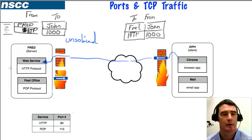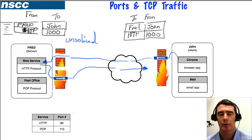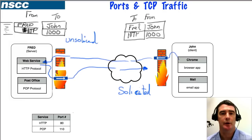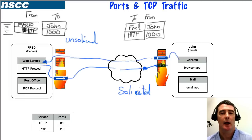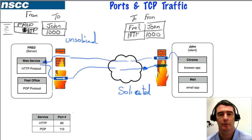That return traffic goes out through Fred's firewall and hits John's firewall. The firewall inspects it and recognizes it as solicited traffic, because John had previously sent a request to Fred from port 1000 and this is the response back to that same port. Solicited traffic is allowed through automatically — no special rule is needed. John's computer then sees the packet is destined for port 1000 and knows to send it to the Chrome browser rather than the email application.